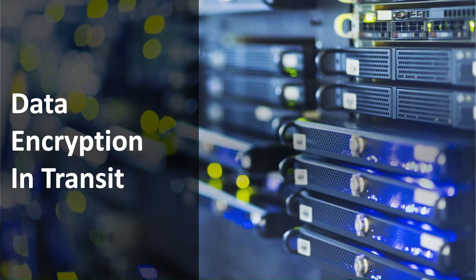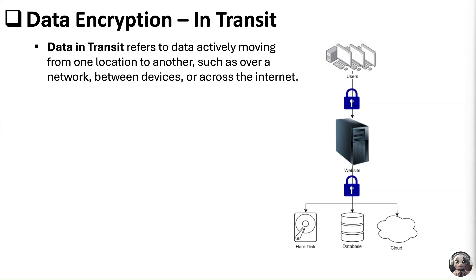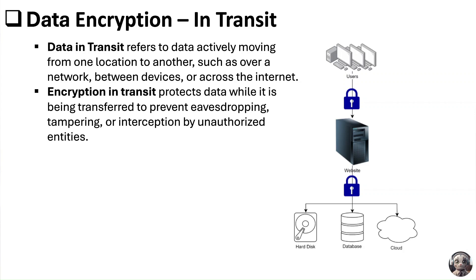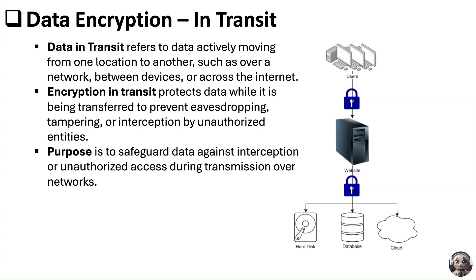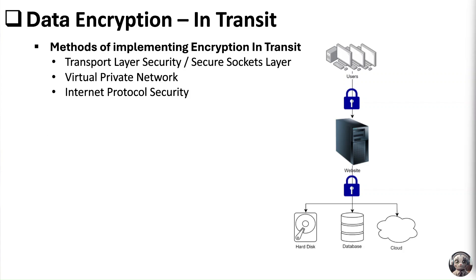Now let's look at data encryption in transit. Data in transit refers to data actively moving from one location to another, such as over a network, between devices, or across the Internet. Encryption in transit protects data while it is being transferred to prevent eavesdropping, tampering, or interception by unauthorized entities. The primary goal is to safeguard data against interception or unauthorized access during transmission over networks. Most modern systems use all or more than one of these methods to deliver a robust solution.